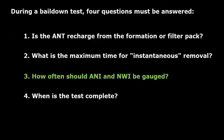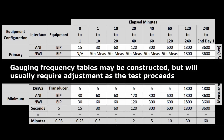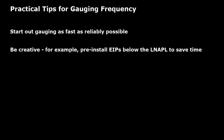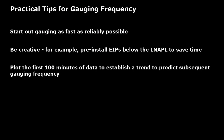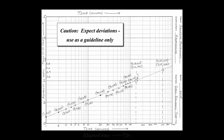How often should the test well be gauged? Gauging frequency tables of expected gauging intervals may be constructed, but will usually require adjustment as the test proceeds. For basic bail-down testing, the primary gauging method is manual gauging using an electronic interface probe, which can reliably achieve 30 to 60 second intervals. Start out gauging as fast as reliably possible and be creative — for example, pre-install electronic interface probes below the LNAPL to save time. Most importantly, plot the first 100 minutes of data to establish a trend to predict subsequent gauging frequency. This plot of gauged apparent NAPL thickness versus time can be made in the field on semi-log graph paper; fit a line through the data and extend it past the 100-minute mark.